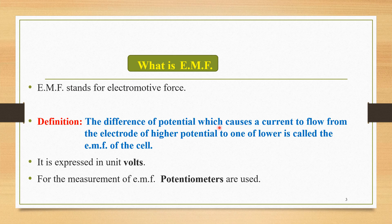One electrode has higher potential while the second one has lower potential. Whenever such a difference in potential exists, it is the basic reason for the flow of current from the higher potential electrode towards the lower potential electrode. This is nothing but the EMF of a particular cell. This EMF of a cell is expressed in units of volt.